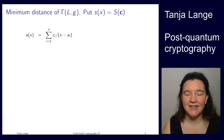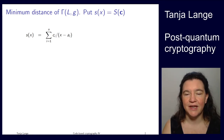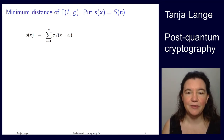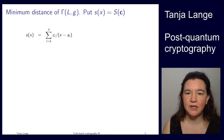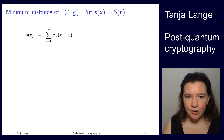Spoiler alert, as I said in the last talk, we will not need the matrices S and P for that. So we really can deal with the secret key just being the support and the Goppa polynomial.